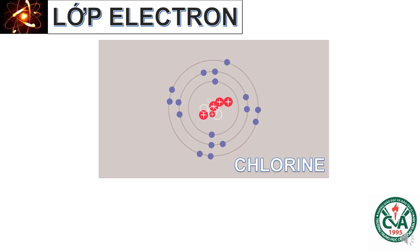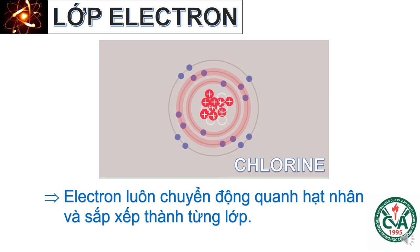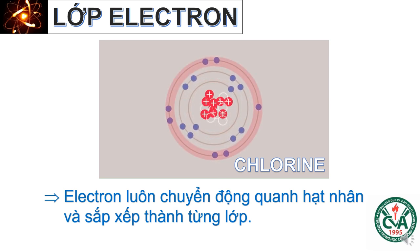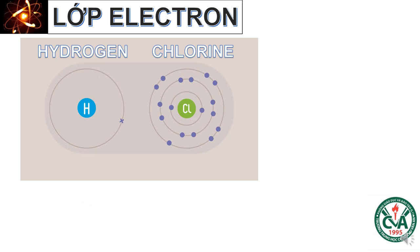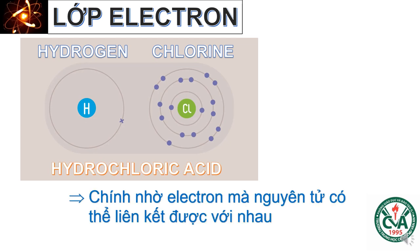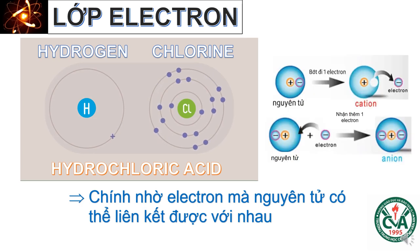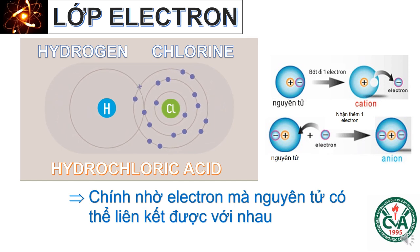Nói thêm về lớp electron: electron luôn chuyển động quanh hạt nhân và sắp xếp thành từng lớp. Quan sát đoạn phim mô phỏng sự liên kết giữa nguyên tử hydrogen và nguyên tử chlorine — chúng ta thấy 2 nguyên tử này có thể liên kết với nhau là nhờ các electron. Một nguyên tử có thể cho bớt đi một electron để tạo thành ion dương; nguyên tử khác có thể nhận thêm một electron để tạo thành ion âm. Ion dương và ion âm hút lẫn nhau tạo sự liên kết giữa các nguyên tử. Tóm lại, chính nhờ electron mà nguyên tử có thể liên kết được với nhau.